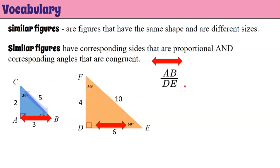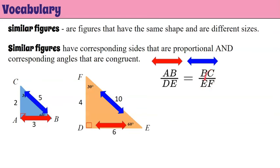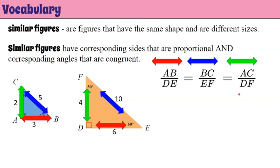Here's what that looks like. Side AB corresponds to side DE. Then the blue sides: side BC corresponds to EF. And the third pair is side AC and side DF — color-coded here are the corresponding sides. If they're similar, the ratio of their corresponding sides will be equivalent. So AB to DE is 3 to 6, BC to EF is 5 to 10, and AC to DF is 4 to 8. All three of these ratios simplify to one-half, so that makes them proportional.